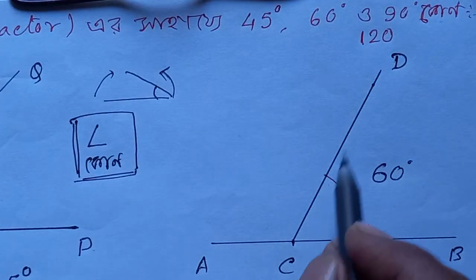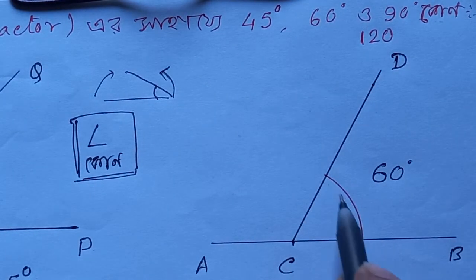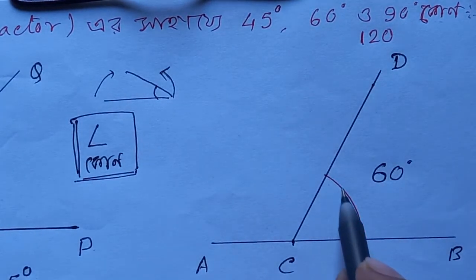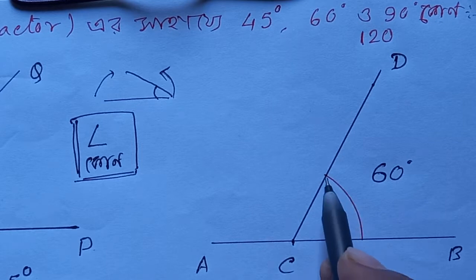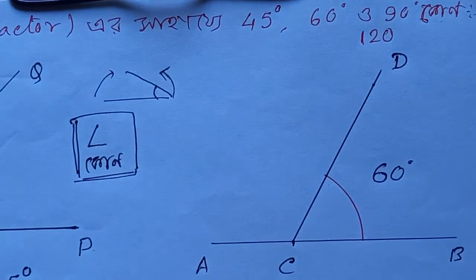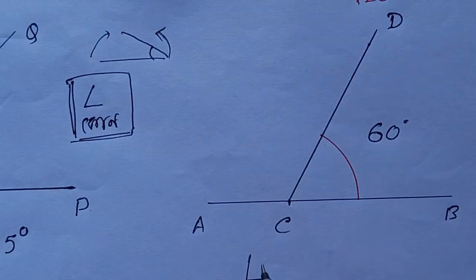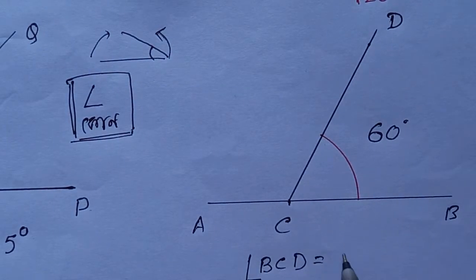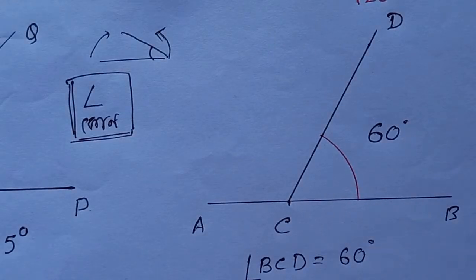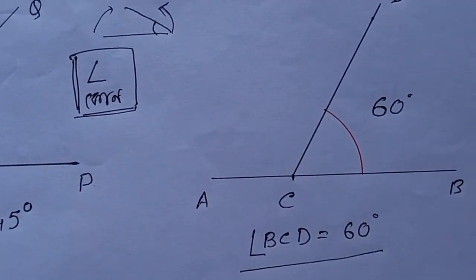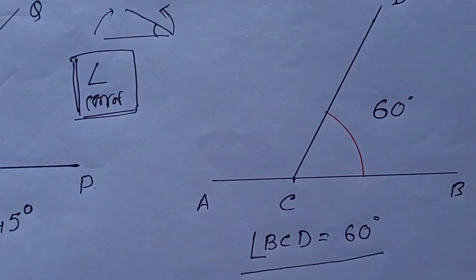How do we write this? How do we write this chapter? Now we write it down. This is B, C, D. 90 degrees.